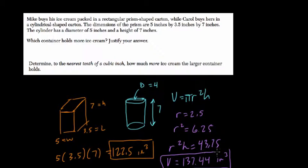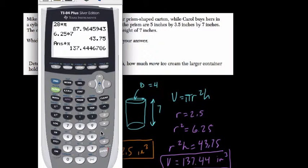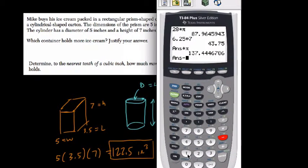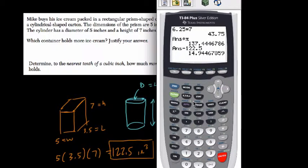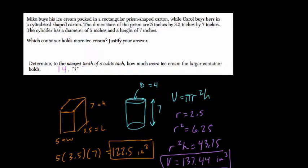And they now want us to say, well, how much more ice cream is that than the rectangular prism holds? So now we just press minus, and then we subtract the 122.5. And they want us to the nearest tenth, so it's 14.94, or therefore 14.9 cubic inches.